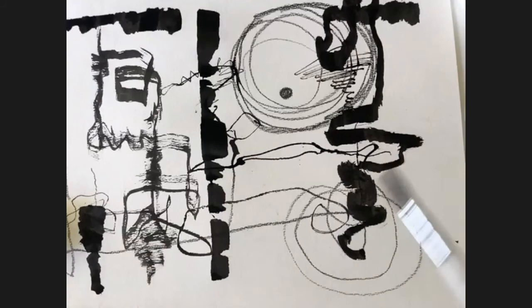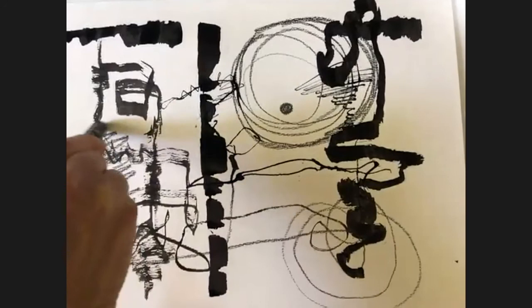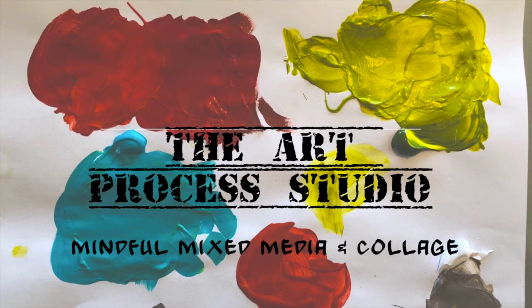So we have a variety of sizes of marks, kinds of marks, and a tonal contrast. Maybe I'll do a little bit more graphite over there. I could also do a little bit of that if I wanted to.